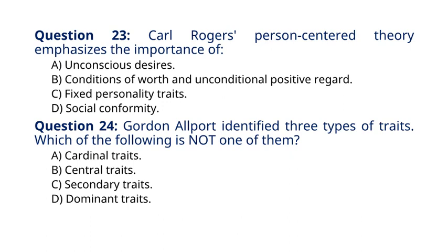Question 24. Gordon Allport identified three types of traits. Which of the following is not one of them? A. Cardinal traits. B. Central traits. C. Secondary traits. D. Dominant traits.